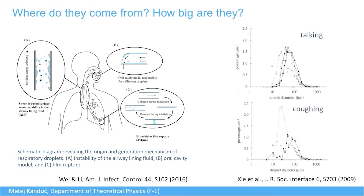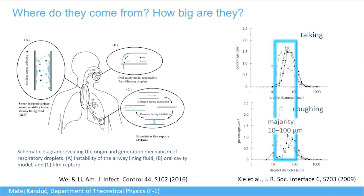Here are size distributions of droplets during talking and coughing. The distributions are roughly similar, though coughing produces a larger amount. The majority of droplets falls in the range between 10 and 100 microns. Some can be smaller, and sneezing can produce even larger droplets, but the majority is in that window—numbers we will keep in mind.